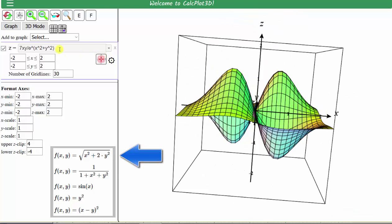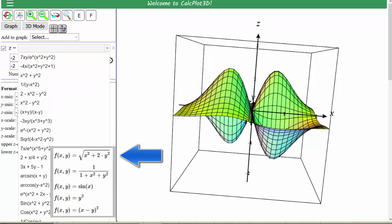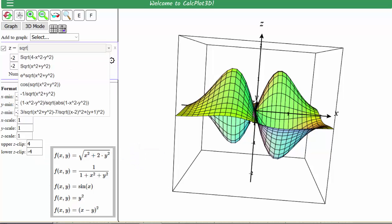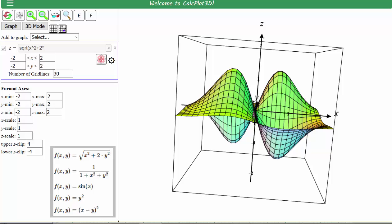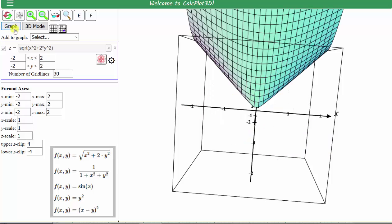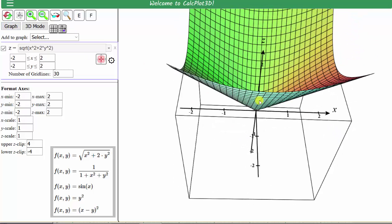Let's graph the first function, which is f of x comma y equals the square root of the quantity x squared plus 2y squared. So we'll go ahead and clear the current function and enter sqrt for square root, open parenthesis, x to the second plus 2 times y to the second, close parenthesis, and press enter or click graph. Here's the graph of the surface.